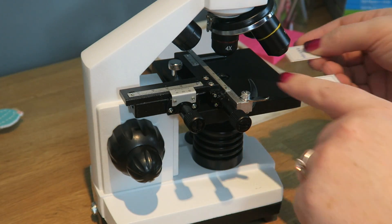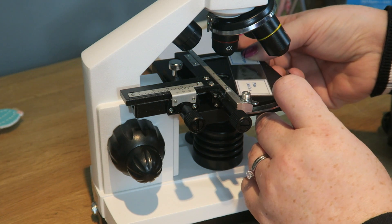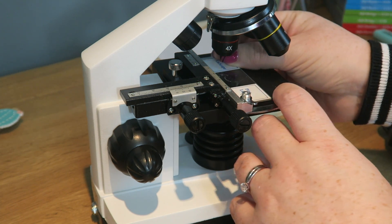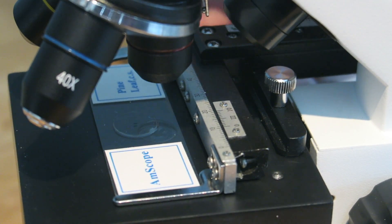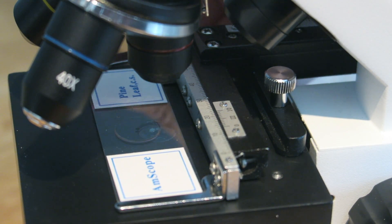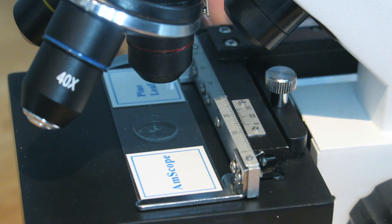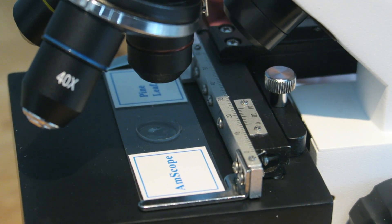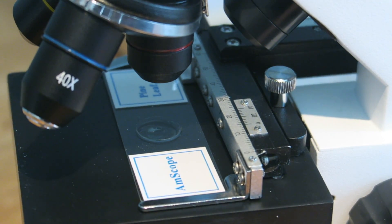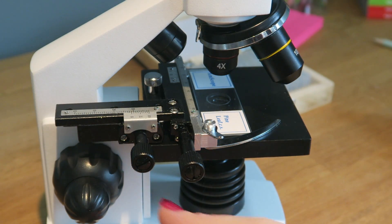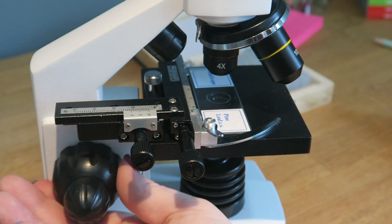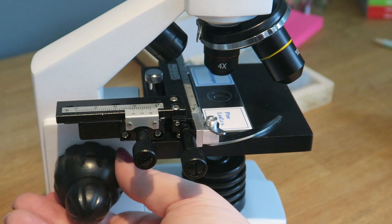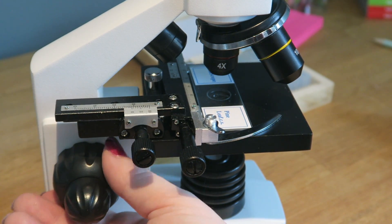When you actually want to look at the slide, you can take your slide and put it into the clips. You can then move the slide around so that the sample you're actually wanting to look at is on top of the circle in between the light source and the eyepiece. You're going to want to start with your lowest objective, so the four times objective, and you're going to want to have that quite high up towards it, so you can actually see what's going on.